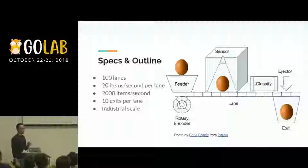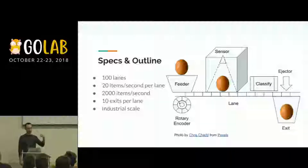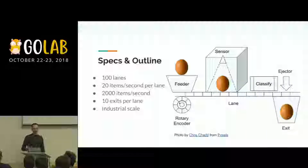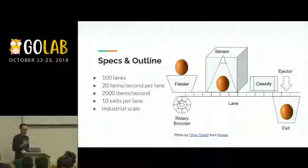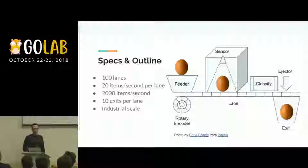This is the general overview of our machine. In the case of an egg, there is a feeder where the egg is placed, then it is put over a lane and passes by several sensors which analyze the item and extract its features. The object eventually reaches a point where it has to be classified, and that classification causes the egg to be ejected into a particular exit. These machines can have multiple lanes in parallel — up to 100 — and we can have for example 20 items per second, so generally speaking we have to manage thousands of objects per second.